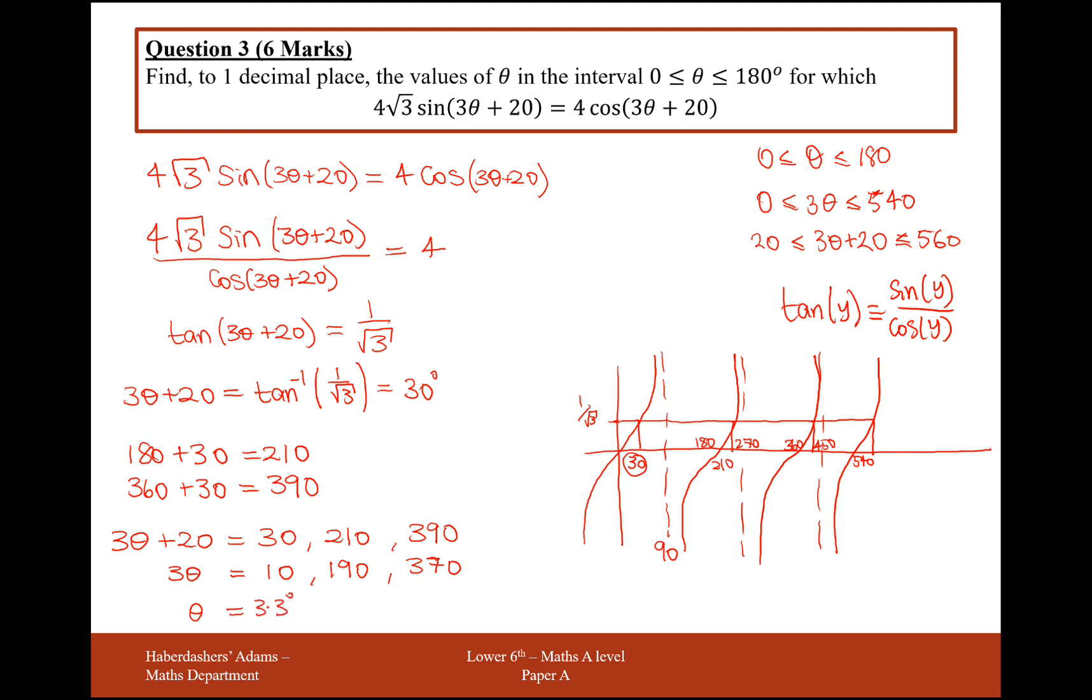What does my answer want this to? One decimal place. Okay, so 3.3 is fine. 63.3 is next. And 370 divided by 3 is 123.3. All of those are to one decimal place. Great, six marks.